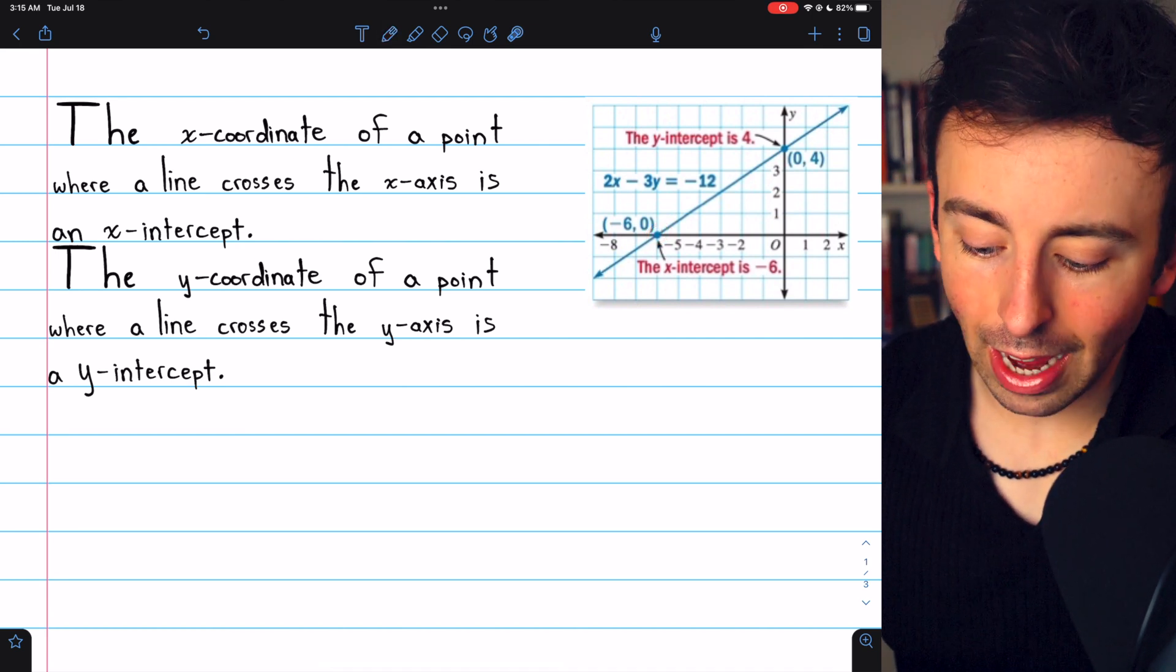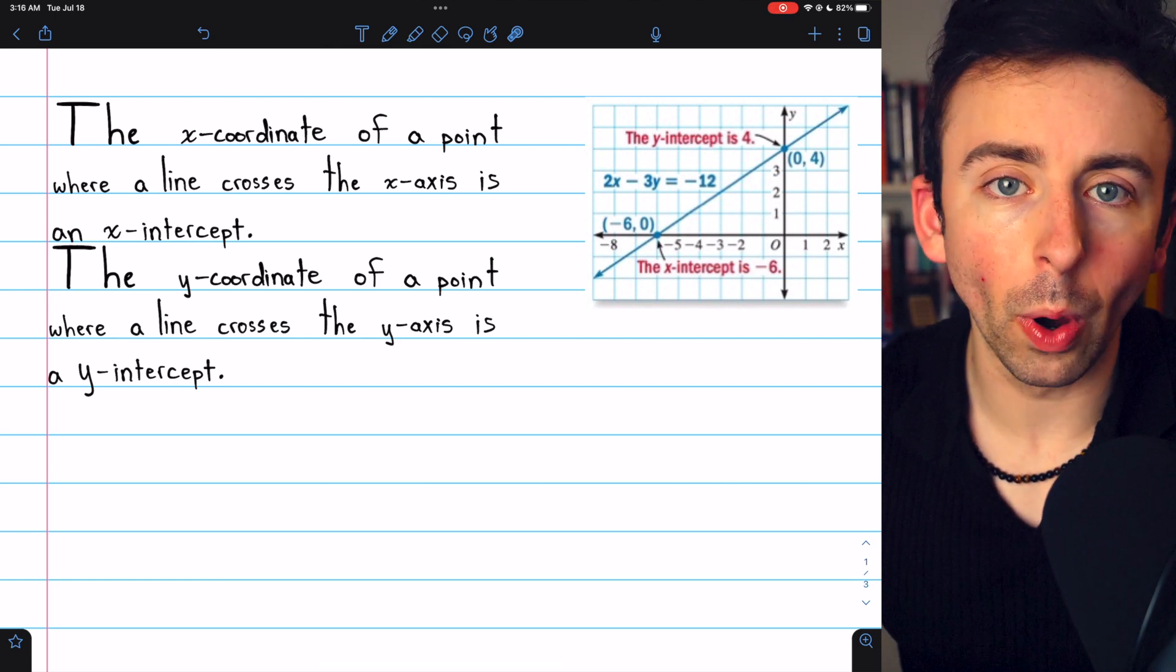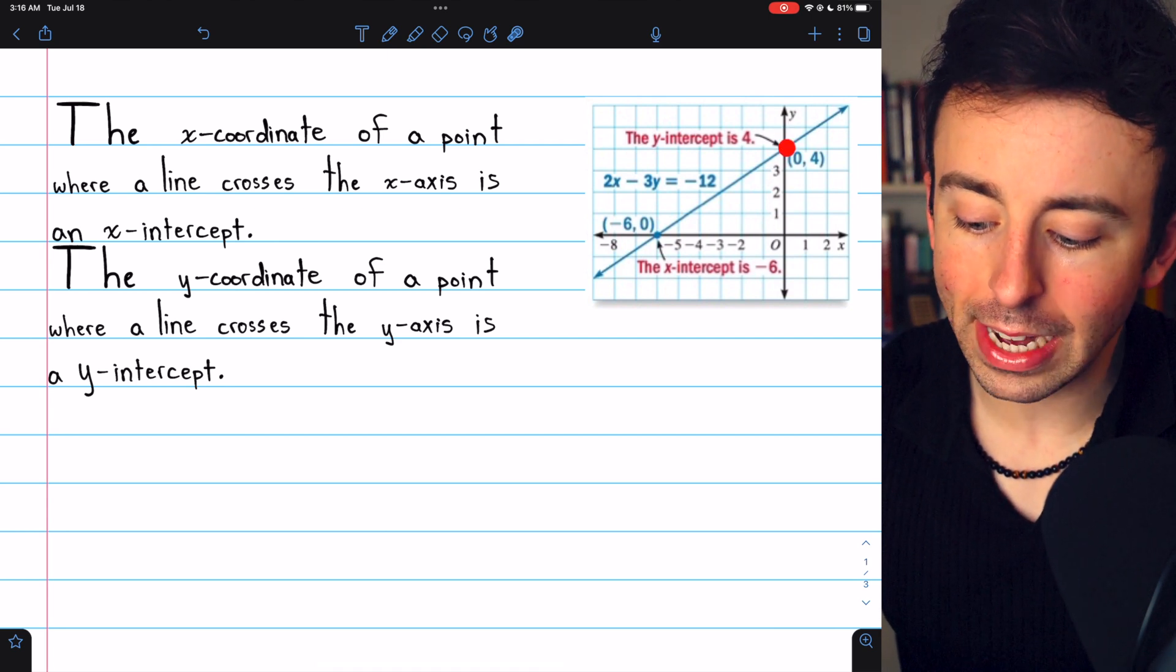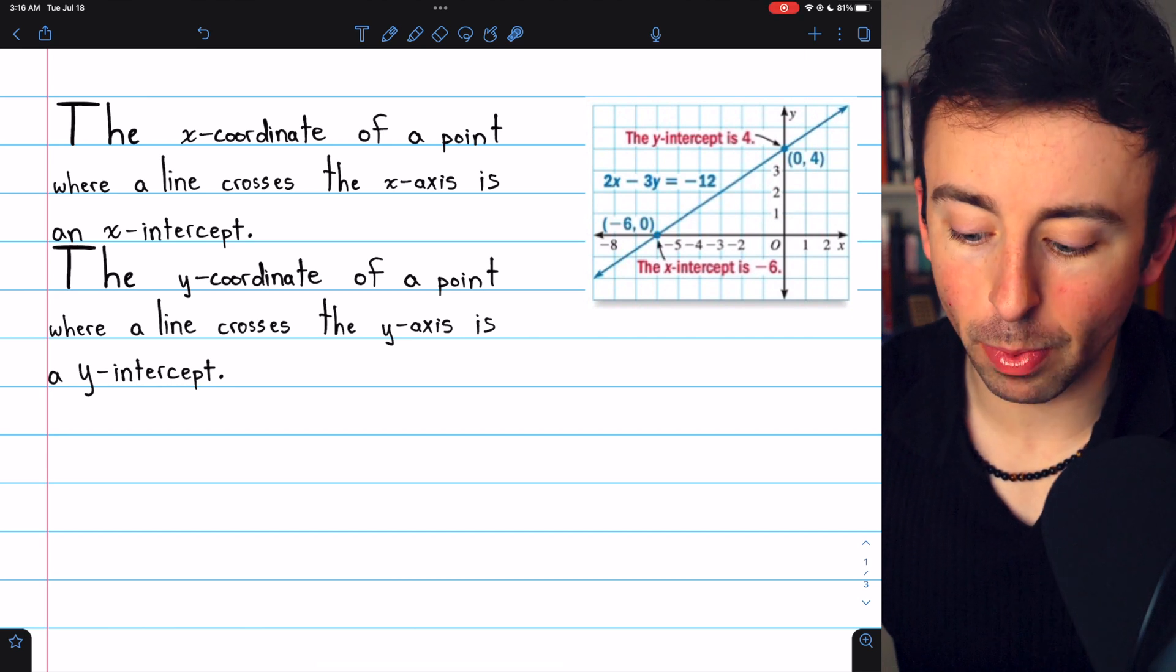Notice in each case how the x-intercept and the y-intercept is a number. It's not the point. The line crosses the y-axis at the point (0, 4), so the y-intercept is the number 4.